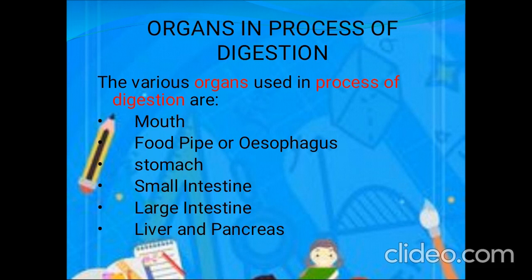The food is then sent to the small intestine, where it is further digested with the help of digestive juices from the liver and pancreas, and nutrients from the food are absorbed here. The remaining undigested food is sent to the large intestine, where water is reabsorbed and solid waste is sent as feces through the anus.